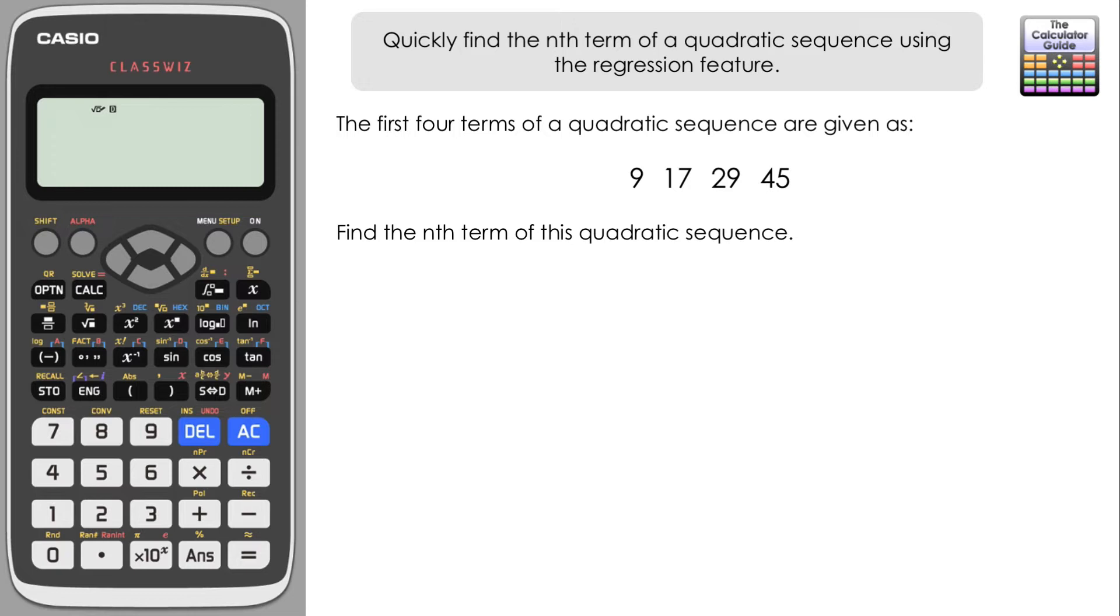This is a little bit of a hack method as we're going to be using the regression feature from the statistics mode on the ClassWiz to help us out with this. If we go to menu and then statistics, this time we want the third option down. You can see it's laid out with the components of a quadratic equation: y equals a plus bx plus cx squared. Must have an x squared term there for it to be a quadratic equation.